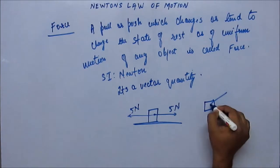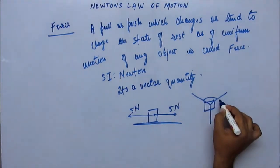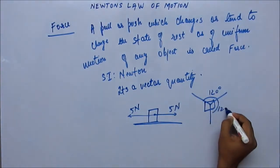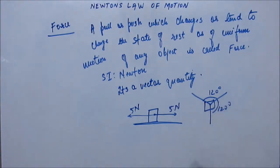If there's a block like this and there are three forces acting on the block, each at 120 degrees like this and equal in magnitude, then the net amount of force on this block is zero.